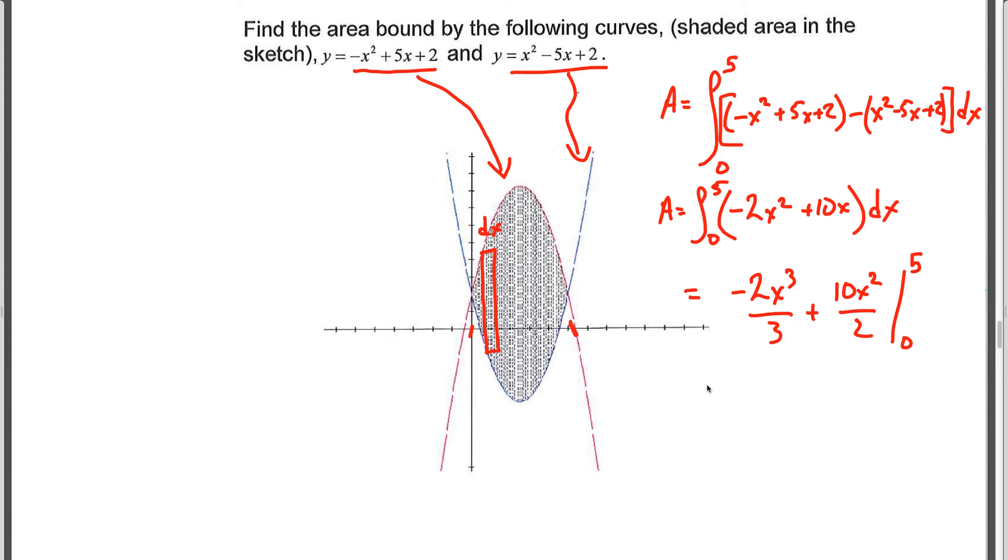If we go ahead then, that's going to be -2 times 5³/3, plus, and we're going to say that's 5 times 5², or 5². And then that's plugging in 5. If we plug in 0, everything becomes 0, so we'll just write minus 0. And if we evaluate that, we end up with 125/3, and we can call that units squared. So that's the area between those two curves.